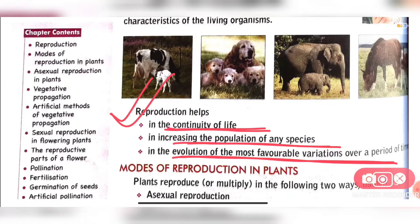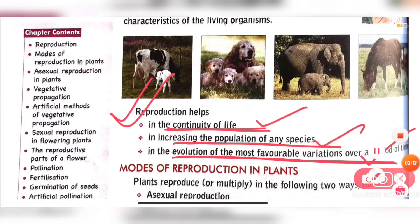After the life span, the animal or plant will die. So for continuity, for the increasing of population, and for the evolution of the most favorable variation, reproduction is a very important thing.